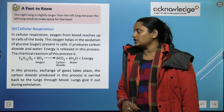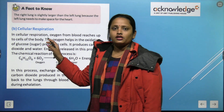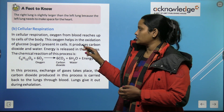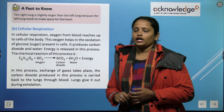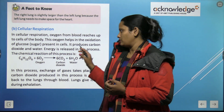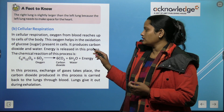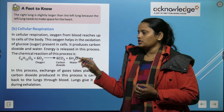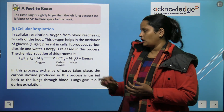What is cellular respiration? In cellular respiration, oxygen from the blood reaches the cells in the body. This oxygen helps in the oxidation of glucose present in the cells. It produces carbon dioxide in the body and energy is released in this process. The chemical reaction is: C₆H₁₂O₆ + O₂ → CO₂ + H₂O + Energy.